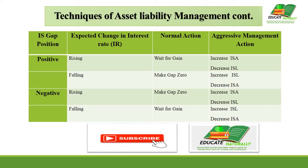In the negative gap situation, if market interest rates are rising, the normal action is to try to make the gap zero, but the aggressive management action would be to increase interest-sensitive assets and decrease interest-sensitive liabilities. In the same negative situation, if interest rates are falling, the normal action is to wait for the gain, and the aggressive action is to increase interest-sensitive liabilities and try to decrease the interest-sensitive gap.